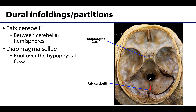The fourth and last dural partition is the diaphragma sellae, and this is going to form a roof over the hypophysial fossa — you can see a bit of it right here. It's going to have an aperture for passage of the infundibulum, often referred to as the pituitary stalk, as well as allow for hypophysial veins to move in this region. So it's a fairly small circular horizontal sheet over this area, and you can see it's a little bit more difficult to see than some of the other dural partitions.